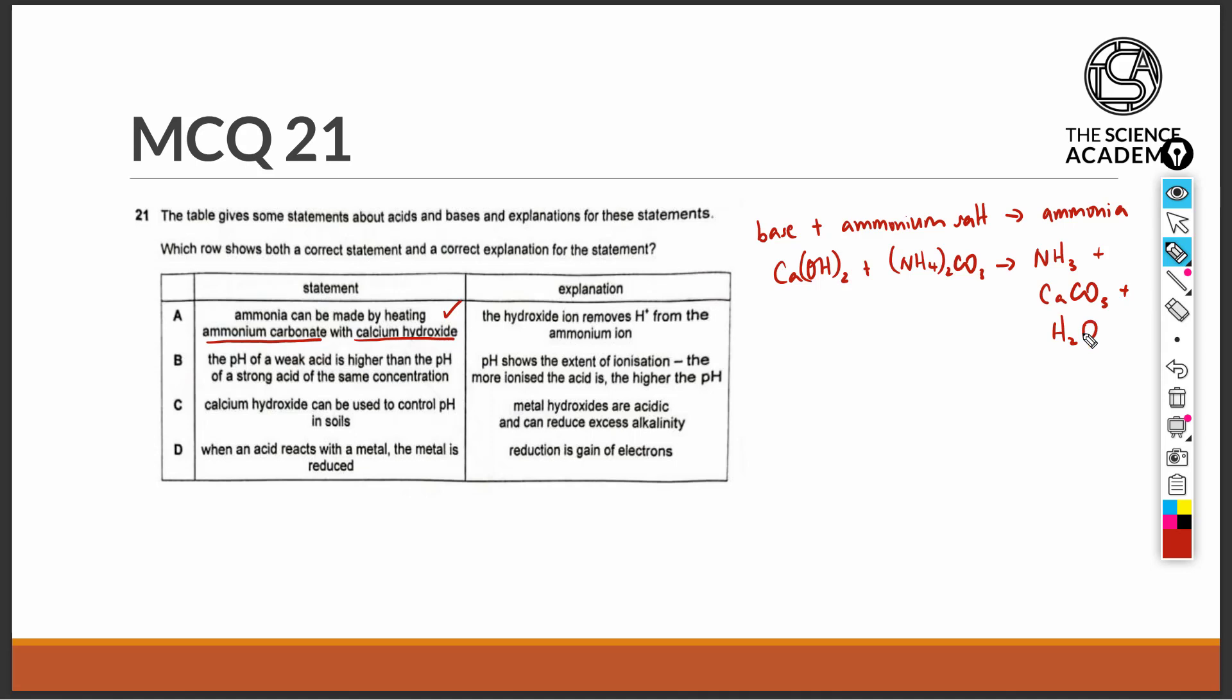We can see that essentially, the metal ion and the anion of the ammonium salt comes together to give us the salt. The hydroxide ions and the ammonium ions are what is reacting to give us the remaining two byproducts of ammonia gas and water.